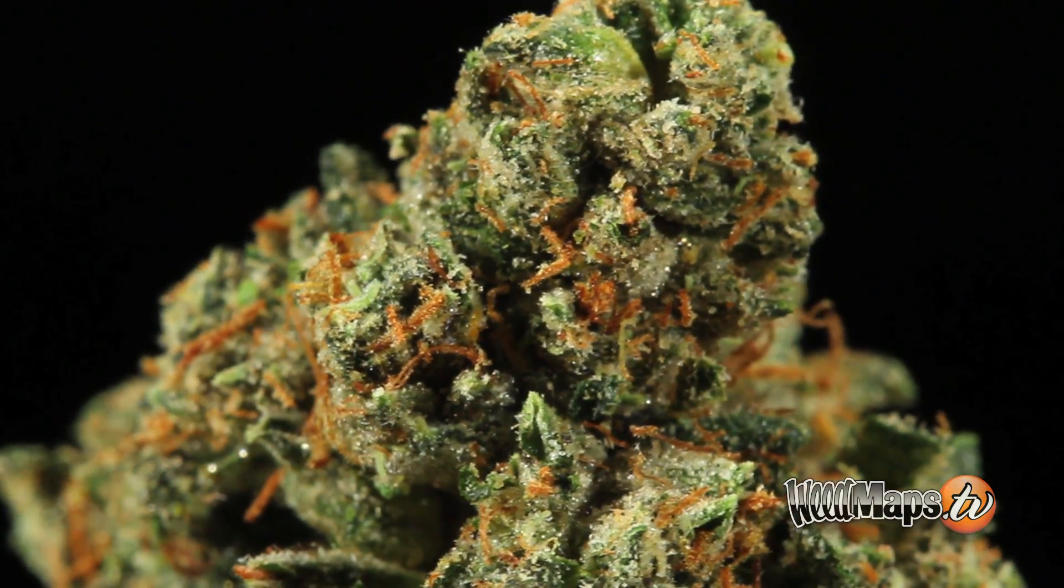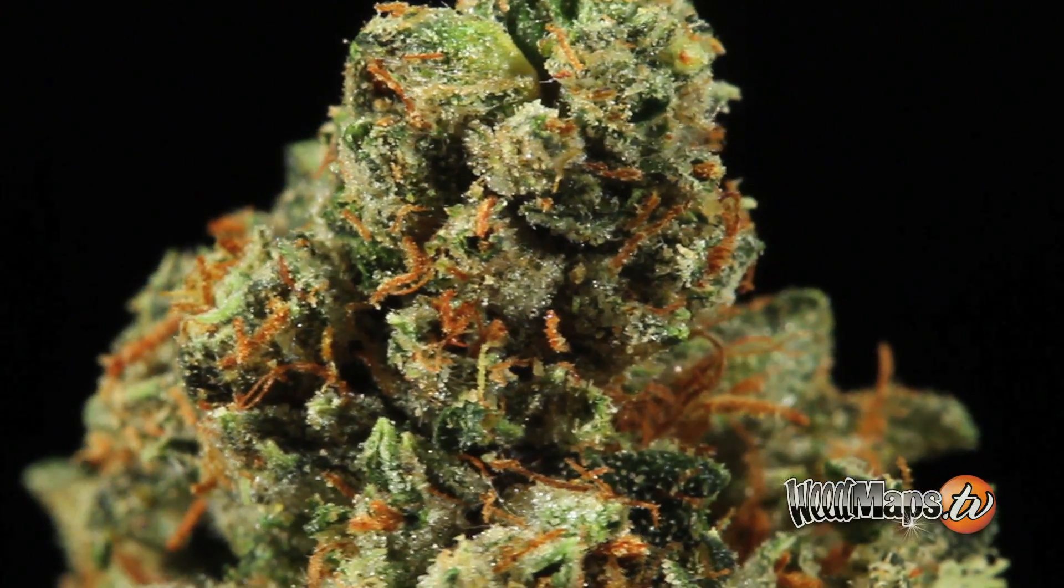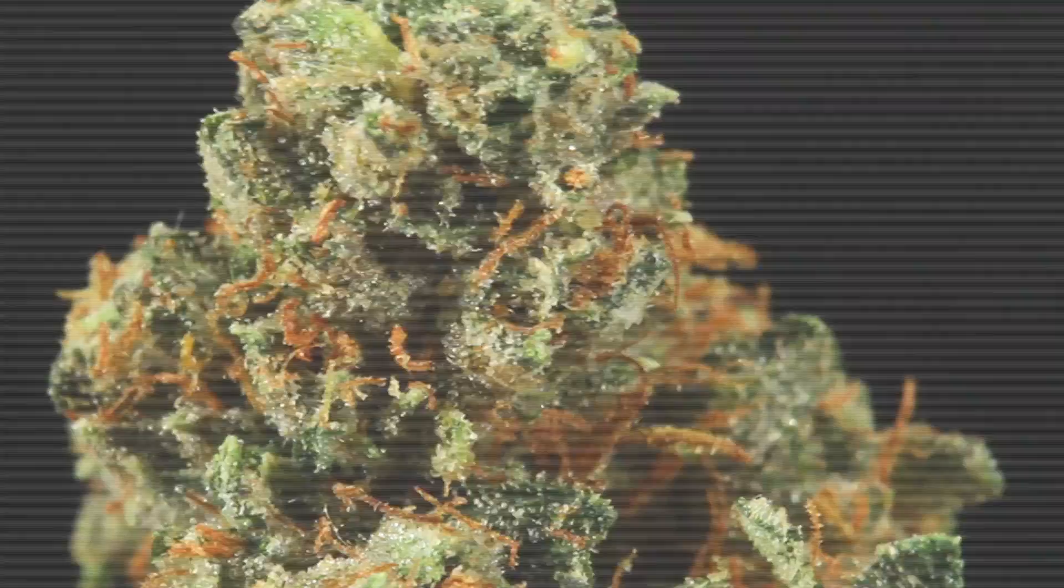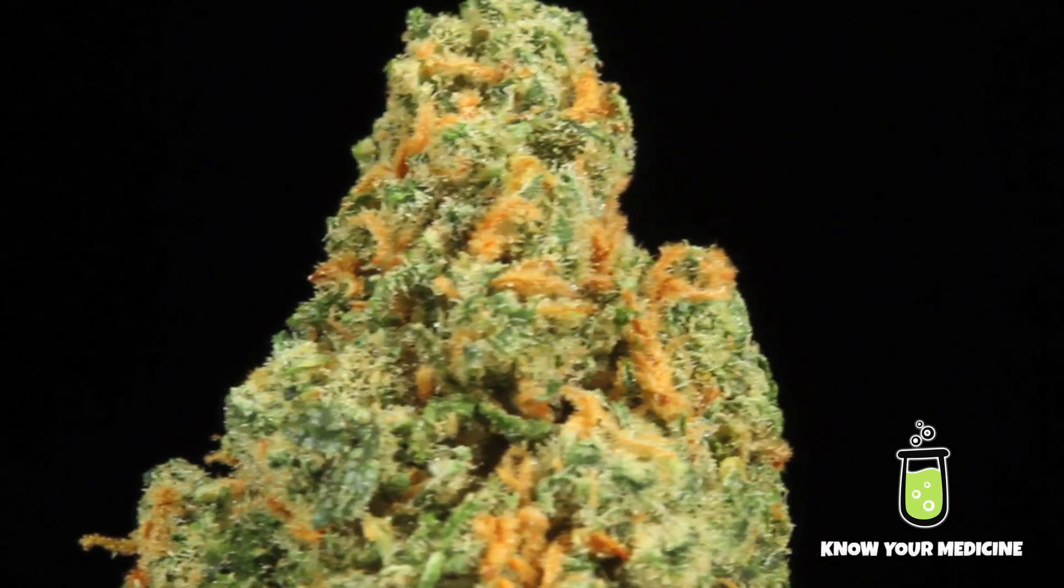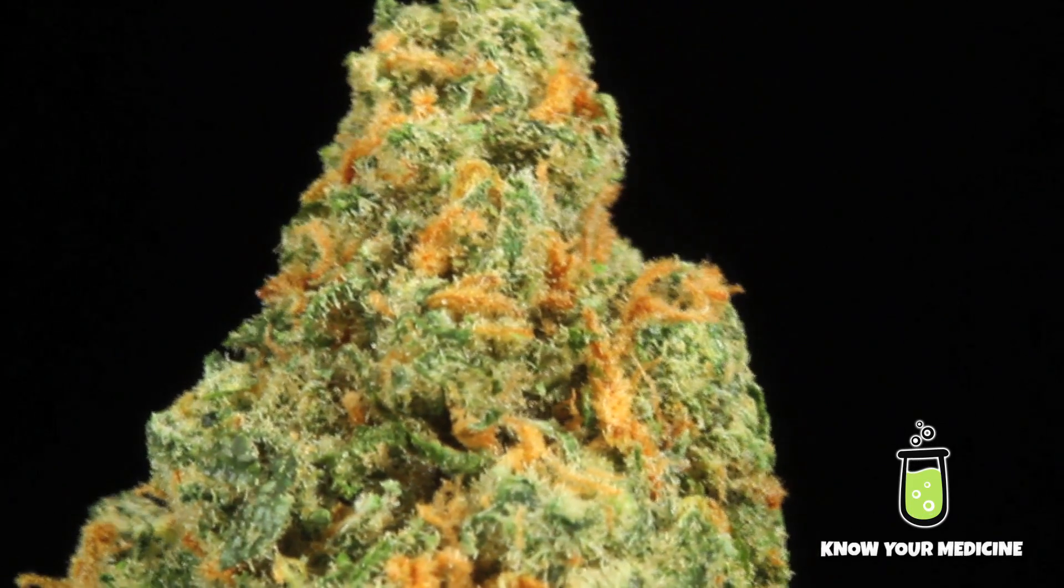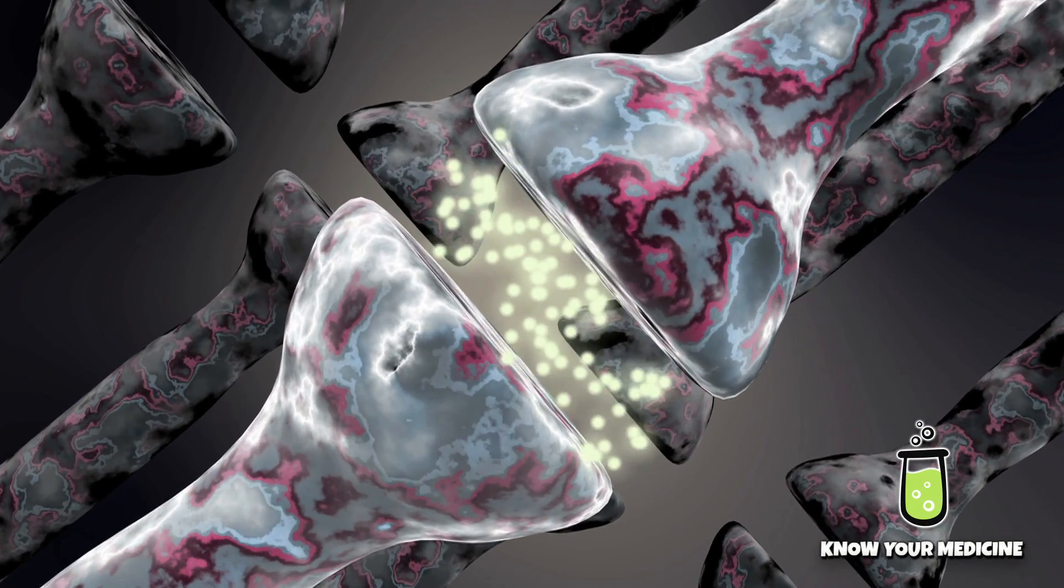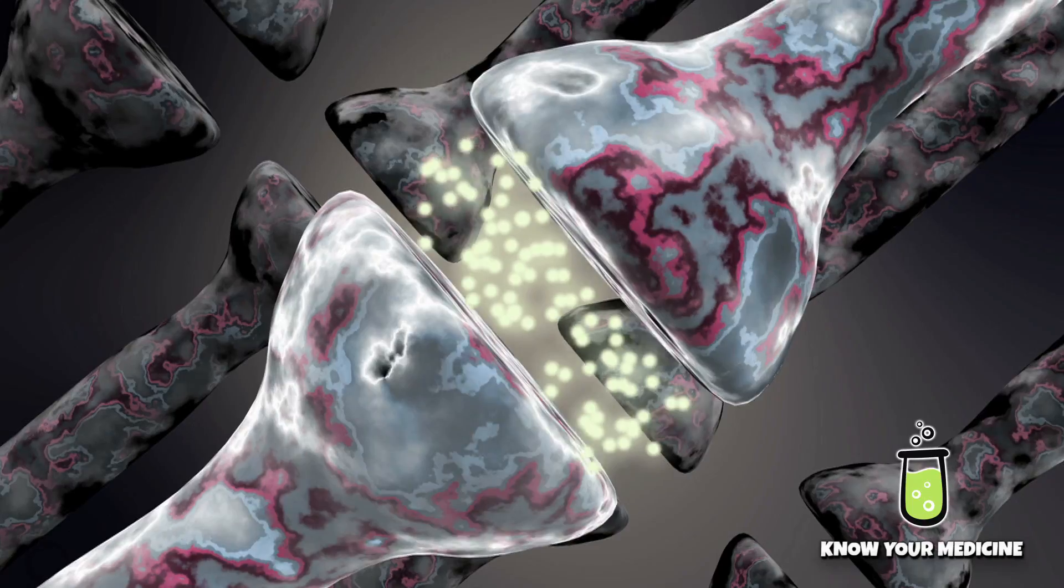They're all somewhat similar to the cannabinoids in chemical structure, so they can definitely have interesting effects. And the terpenoids on their own have been found to have different medical benefits. For example, beta-caryophyllene is one of the few non-cannabinoids that is known to actually activate the CB2 receptor. It's also known as an anti-inflammatory.